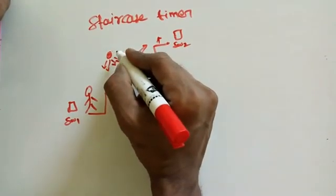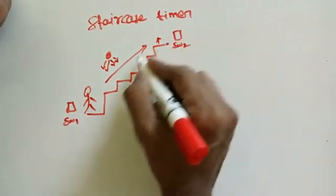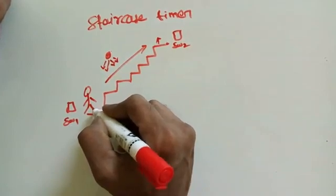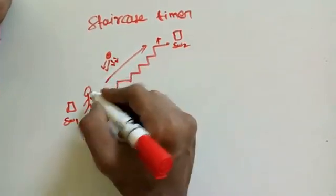Suppose he wants to come down, so only this person switches on here, then comes down to here. After he reaches this level, this lamp going to shut down.